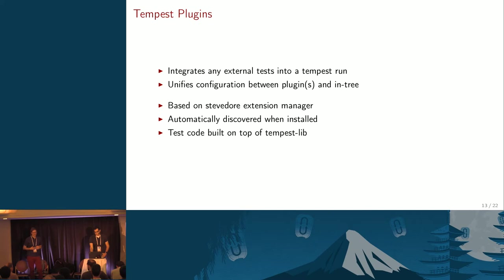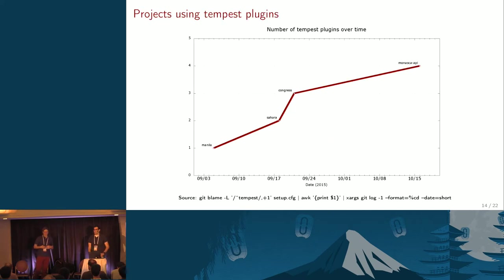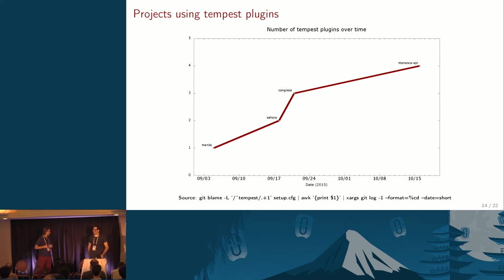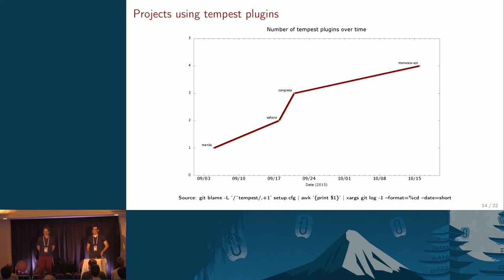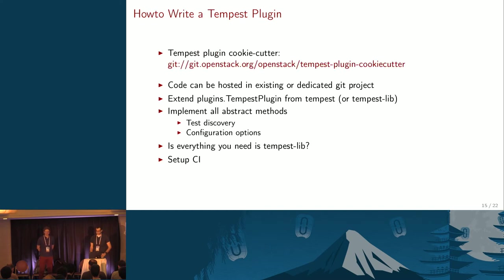The test code you write should be built on top of Tempest lib. It doesn't have to be, but it helps make things a lot easier if it's using the same testing framework underneath. In terms of Tempest plugins, Manila opened the way — it was the first Tempest plugin to be developed — and then we had three more: Sahara, Congress, and Monasca. It doesn't look like the DevStack graph yet, but it's much newer.